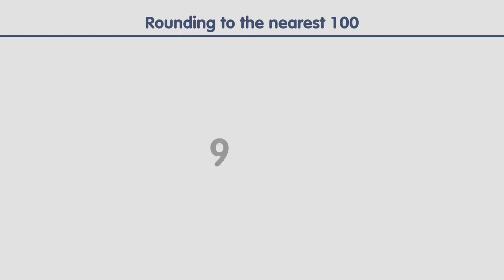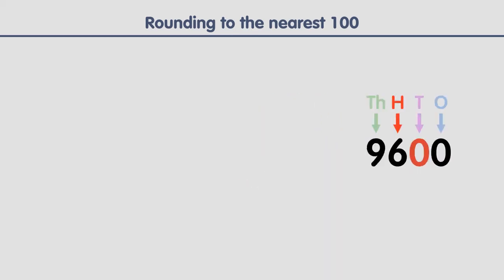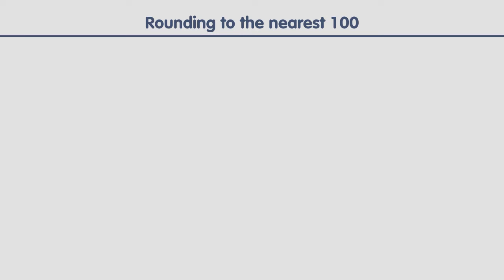Let's look at another example. First, identify the digit in the hundreds place — it's a six. Then take a look at the digit to the right — it's a zero. Zero is less than five, so we don't change the six. Finally, replace the digits to its right with zeros. This is the result. Let's look at more examples.